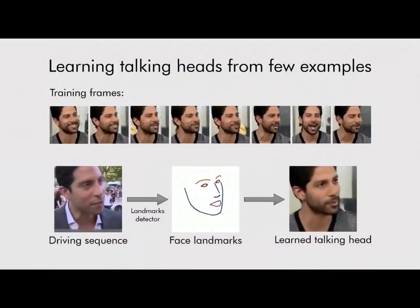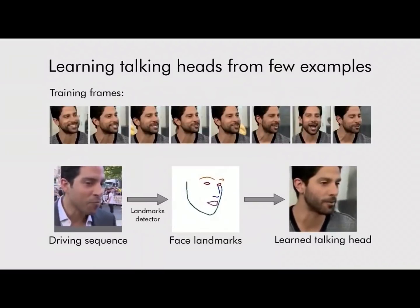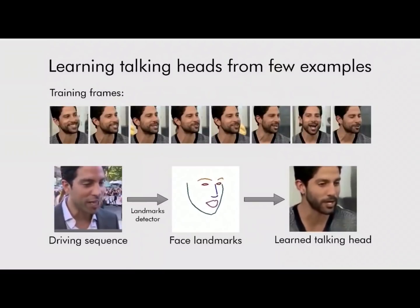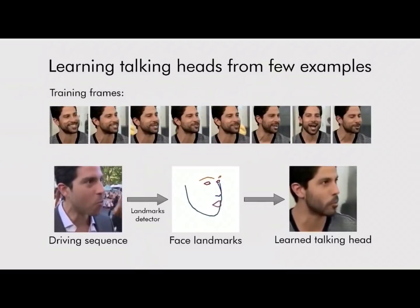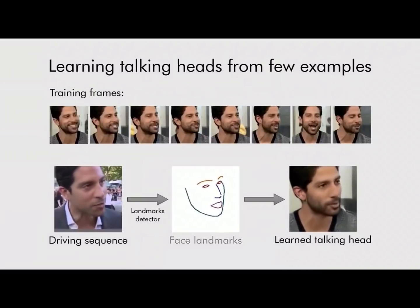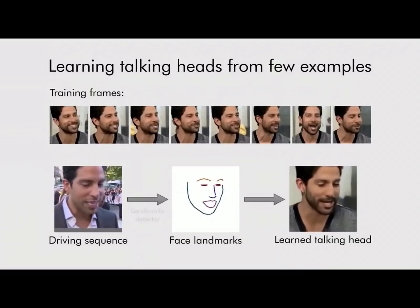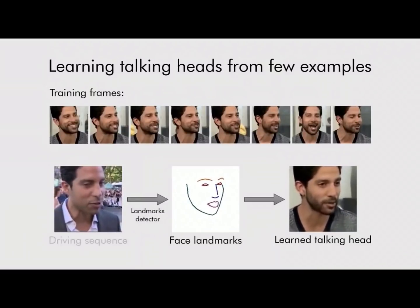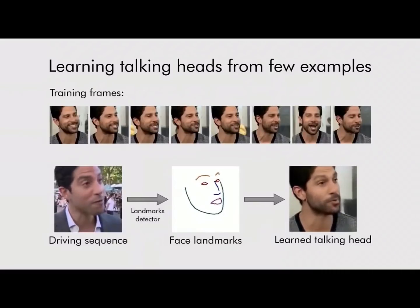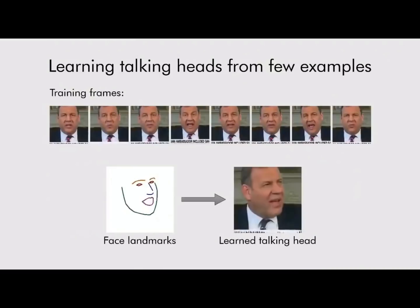A system that can learn realistic talking head models — learning a new head model requires just a handful of images. In this example, the model was learned from eight frames. Once a talking head model is learned, it can be driven by the positions of face landmarks. In this case, we extract landmarks by running an off-the-shelf face landmark tracker on a different video of the same person, effectively making the learned model serve as a realistic avatar. Our talking head models work well even for new view angles not present in the training examples.